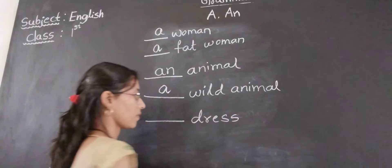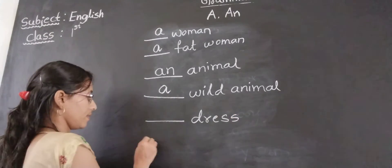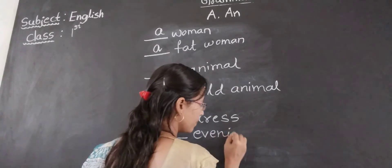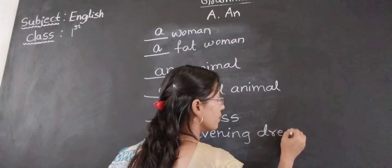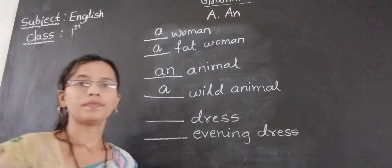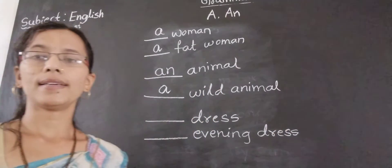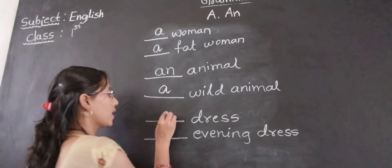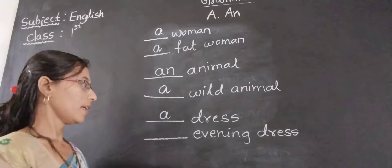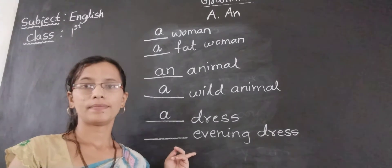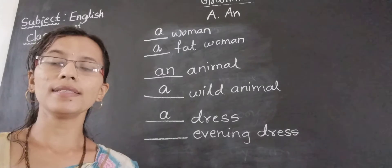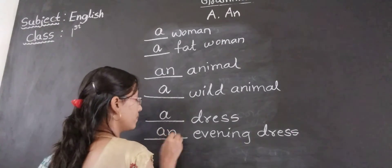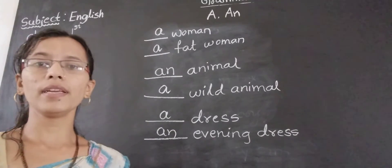Dress, evening dress. Dress — D is a consonant sound, we have to use A. Then evening dress — E is a vowel sound. Beginning of vowel sound, we have to use AN. A dress and AN evening dress.